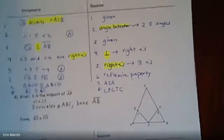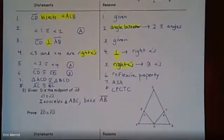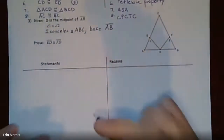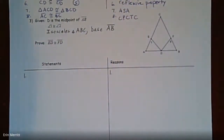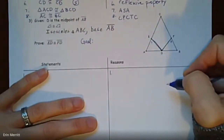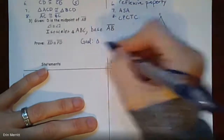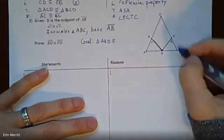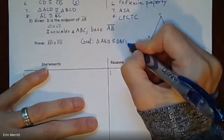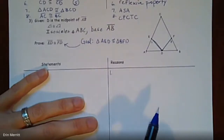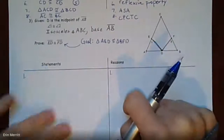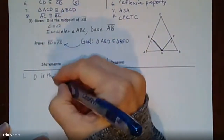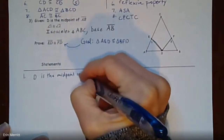This next proof has eight steps — a pretty big one. You've got D as a midpoint, angles one and two, a big isosceles triangle ABC, and you're trying to prove that ED is congruent to FD. Write yourself a goal: ED and FD are parts of smaller triangles, so if you can prove triangle AED is congruent to triangle BFD, then those parts will be congruent. Keep that goal in mind throughout.